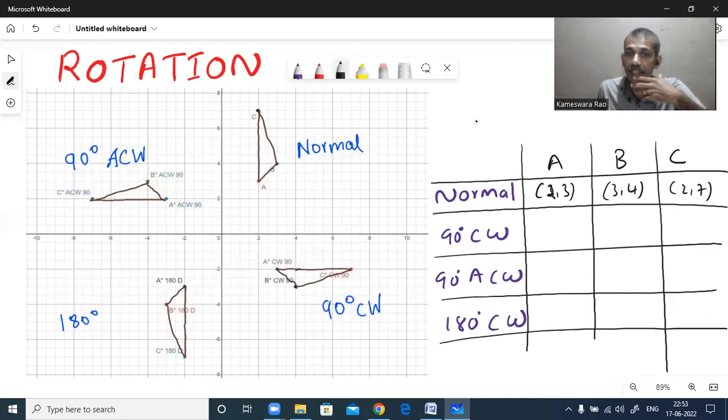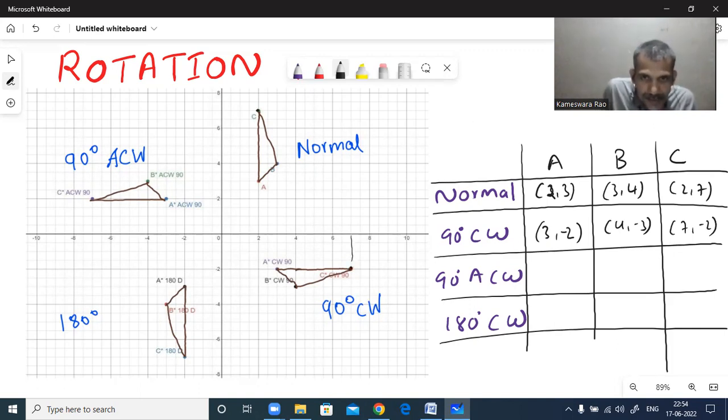If you want to rotate 90 degrees clockwise, you have to interchange x and y first. 3, 2 and then minus you have to write. 3 comma minus 2. Here see all coordinates of normal object are in first quadrant. Then if you rotate 90 degrees it came in quadrant 4. Check A dash is 3 comma minus 2. Correct. Next this also 4 comma minus 3. Correct. This 7 comma minus 2.